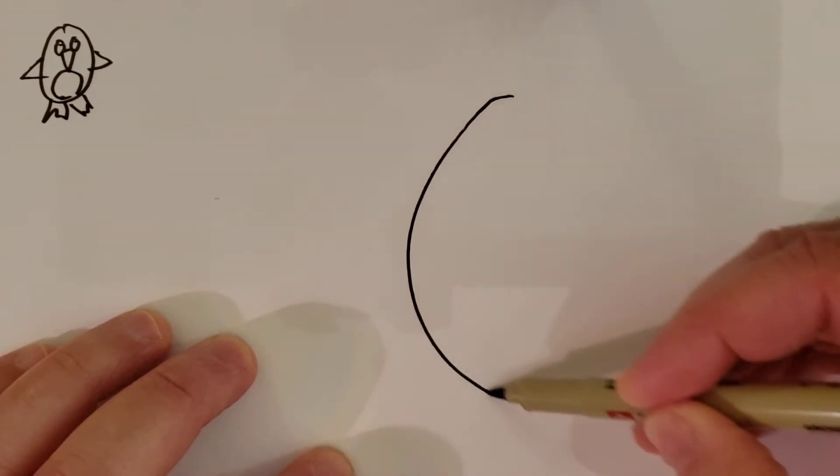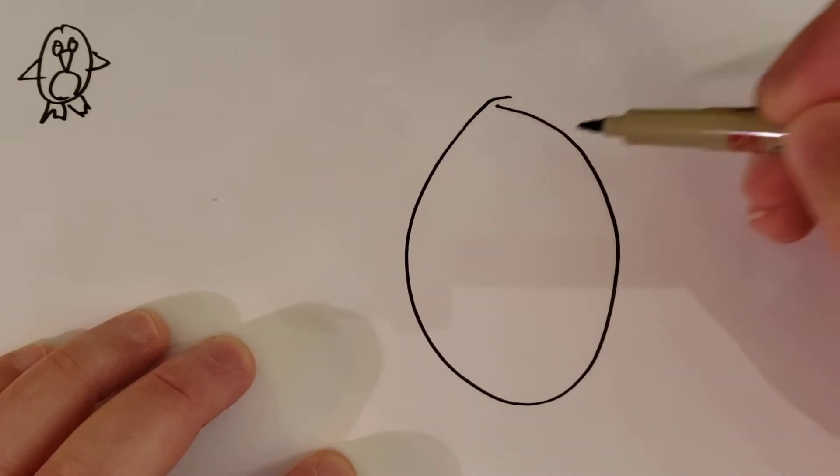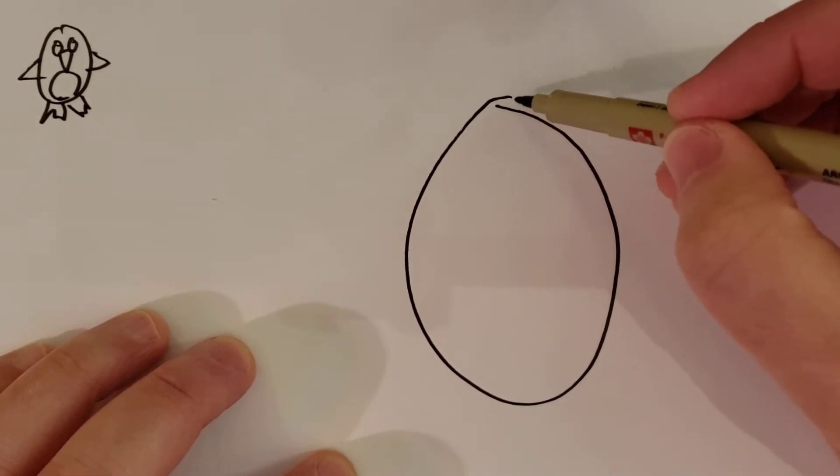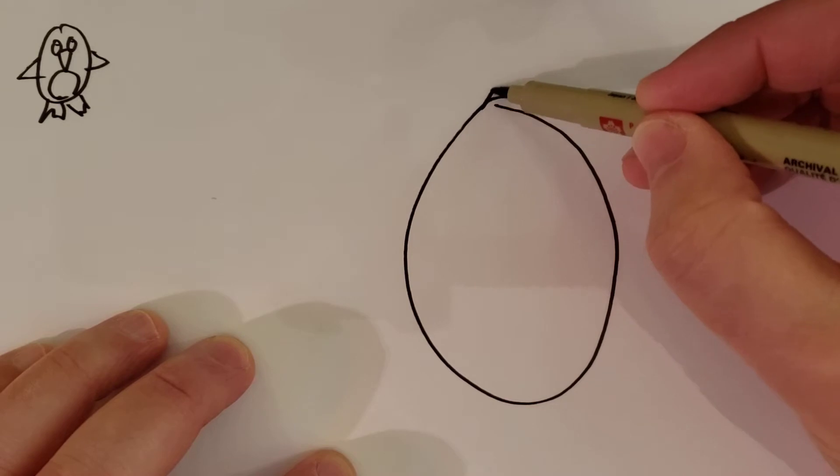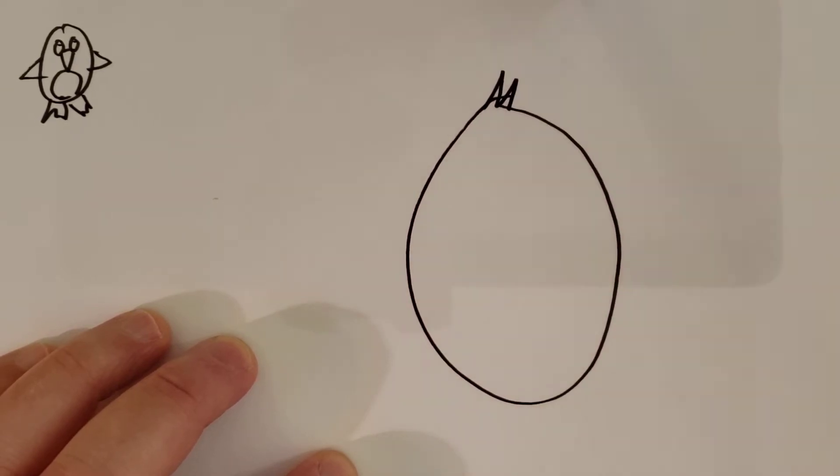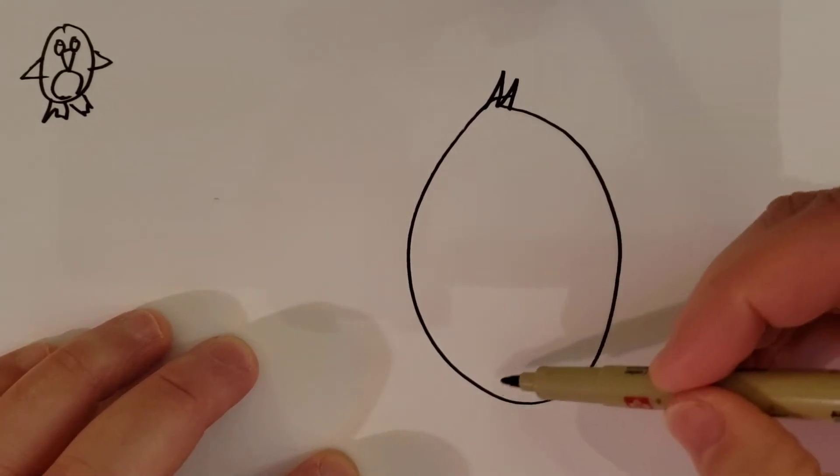Draw an oval shape and we're gonna go to the top and you're gonna go one, two, go down here.